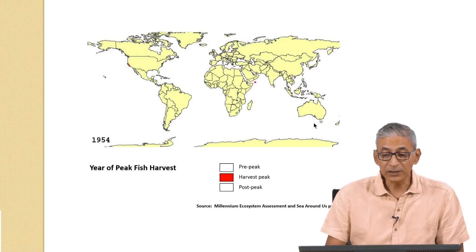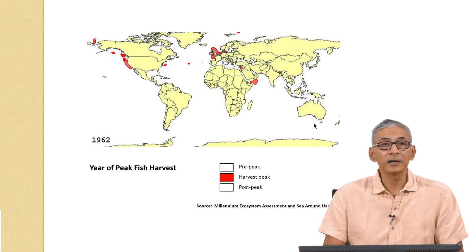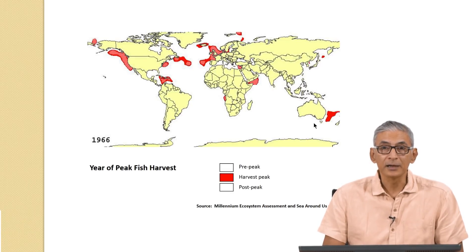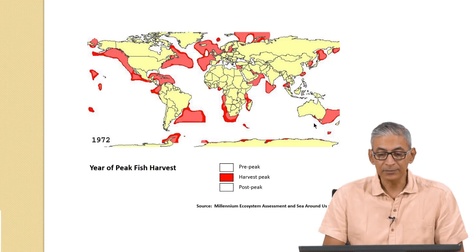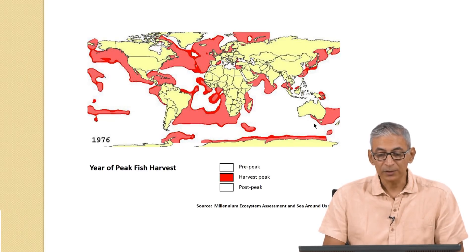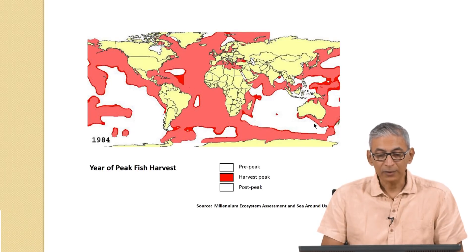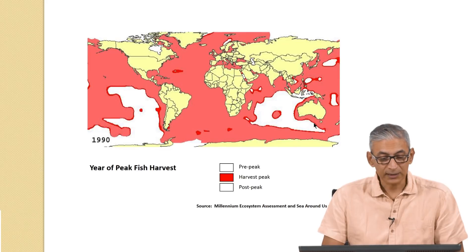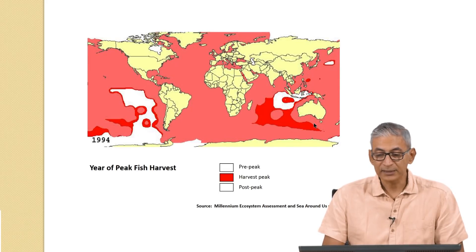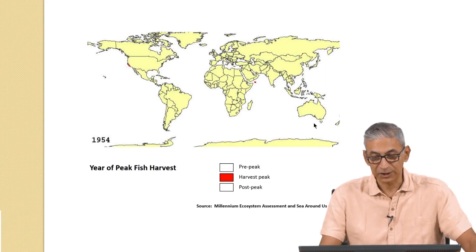The world's fisheries have been seeing an alarming increase in over-harvesting. These images show what has happened when peak harvest took place in all these different fisheries. By the end of the 20th century, almost the entire oceans and seas have been over-harvested for fish.